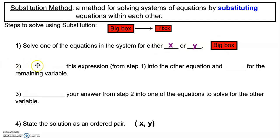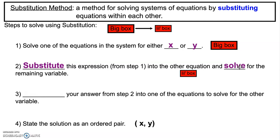Step two: we're going to substitute the expression we got in step one into the other equation — that's going to be our little box. So the big box gets substituted into the little box, and then we solve for the variable that's left. After step two, we will have one of the variables solved for. Then step three is to substitute your answer from step two back into one of the equations to solve for the other variable, and then we state our solution.